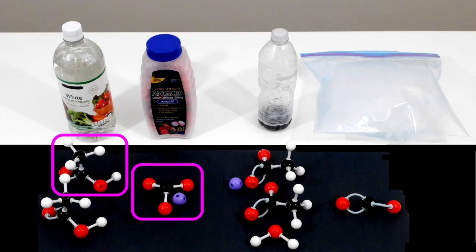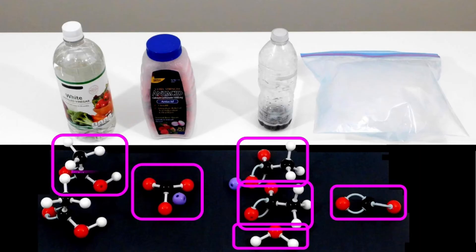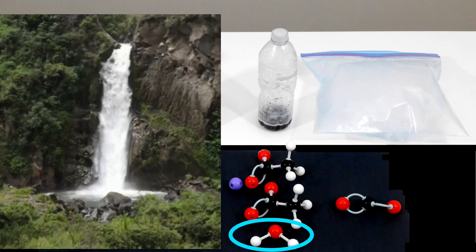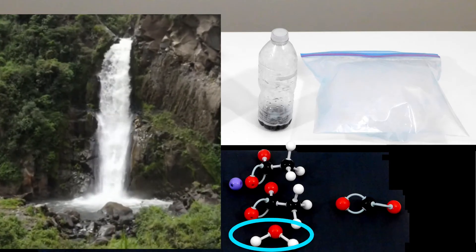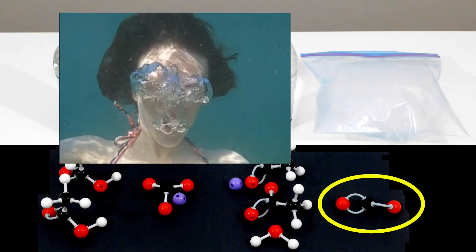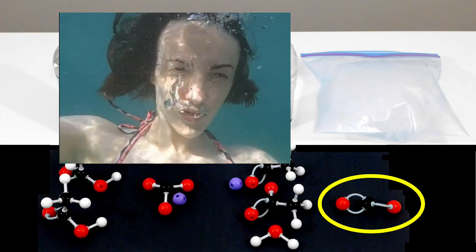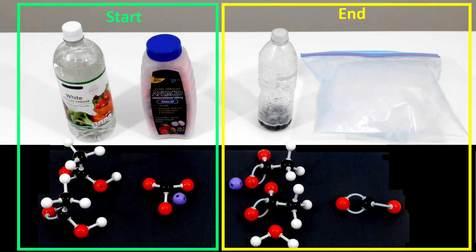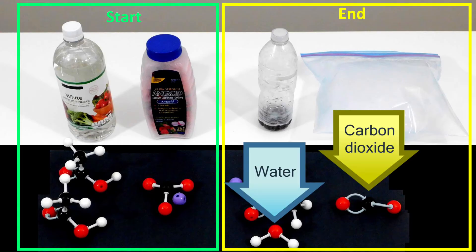Atoms can form groups, which we call molecules. The two most famous molecules you'll learn about in K-12 science are water and carbon dioxide. Water is made when one oxygen atom makes a group with two hydrogen atoms. Carbon dioxide is made when two oxygen atoms make a group with one carbon atom. Carbon dioxide is what we and all animals make in our bodies, so we exhale it with each breath. In a chemical reaction, the atoms change how they are grouped. When this experiment started, there was no water or carbon dioxide in the system. But after the reaction, we have liquid water and carbon dioxide gas, and those two molecules were made during the reaction when the atoms got regrouped.